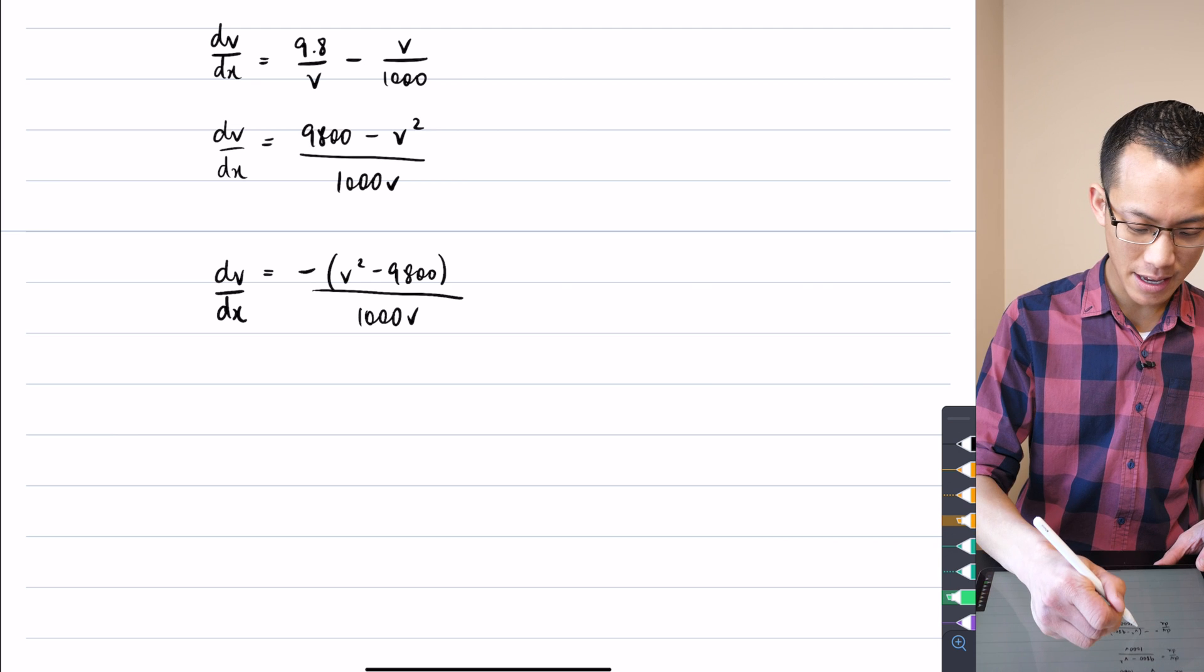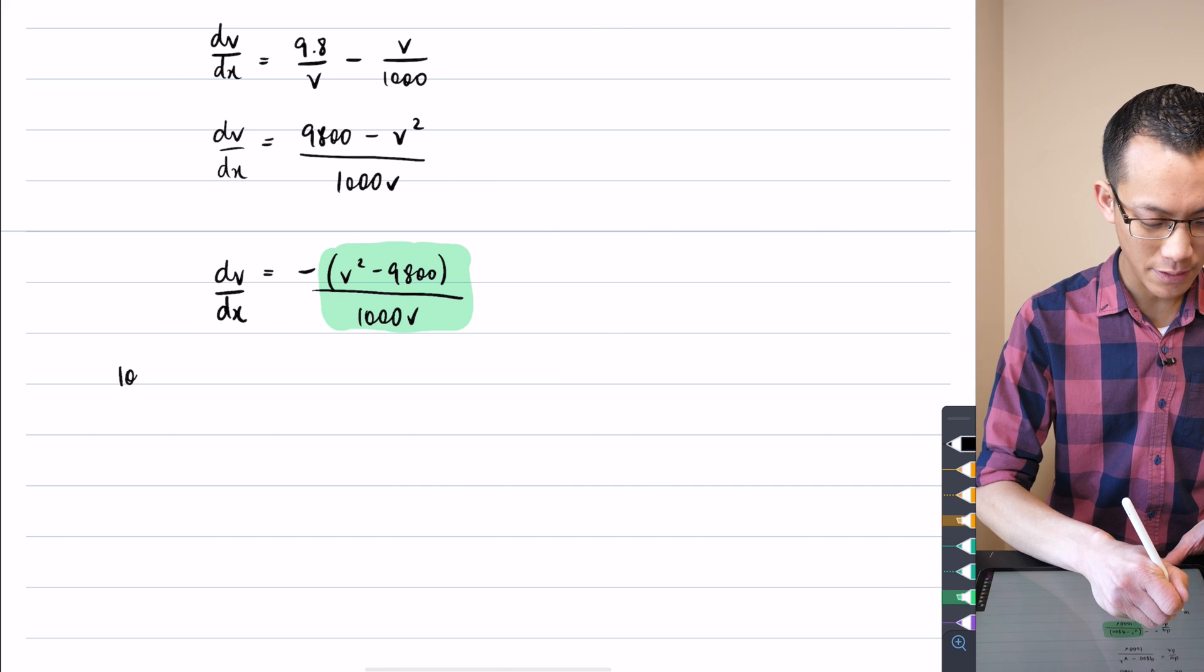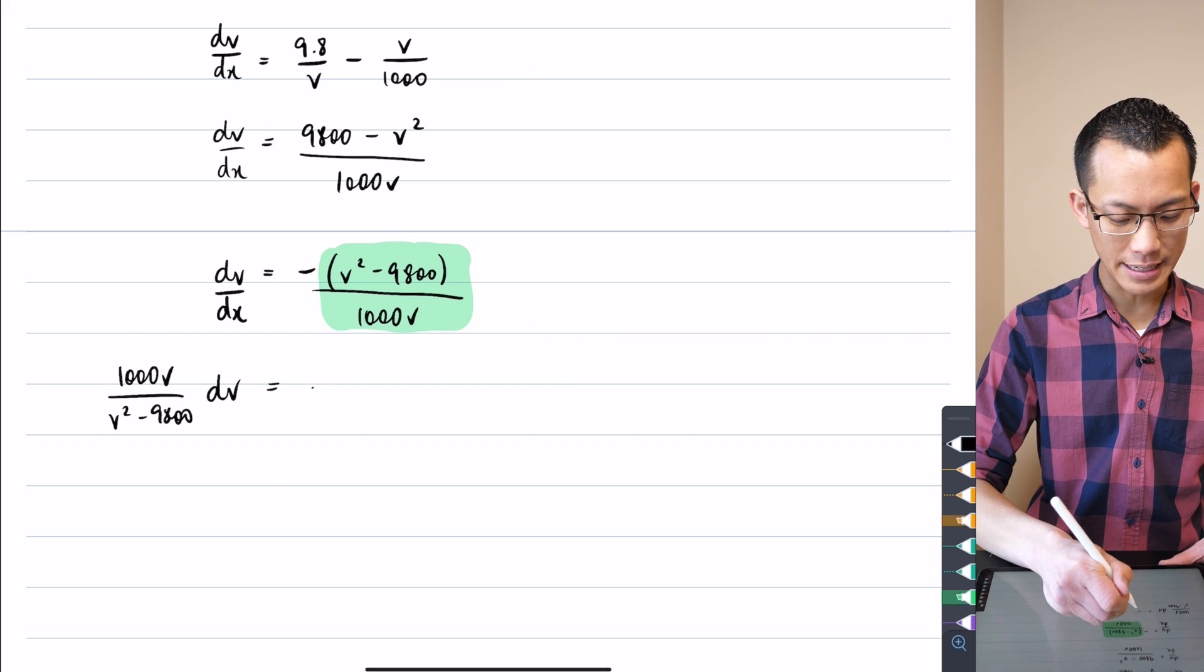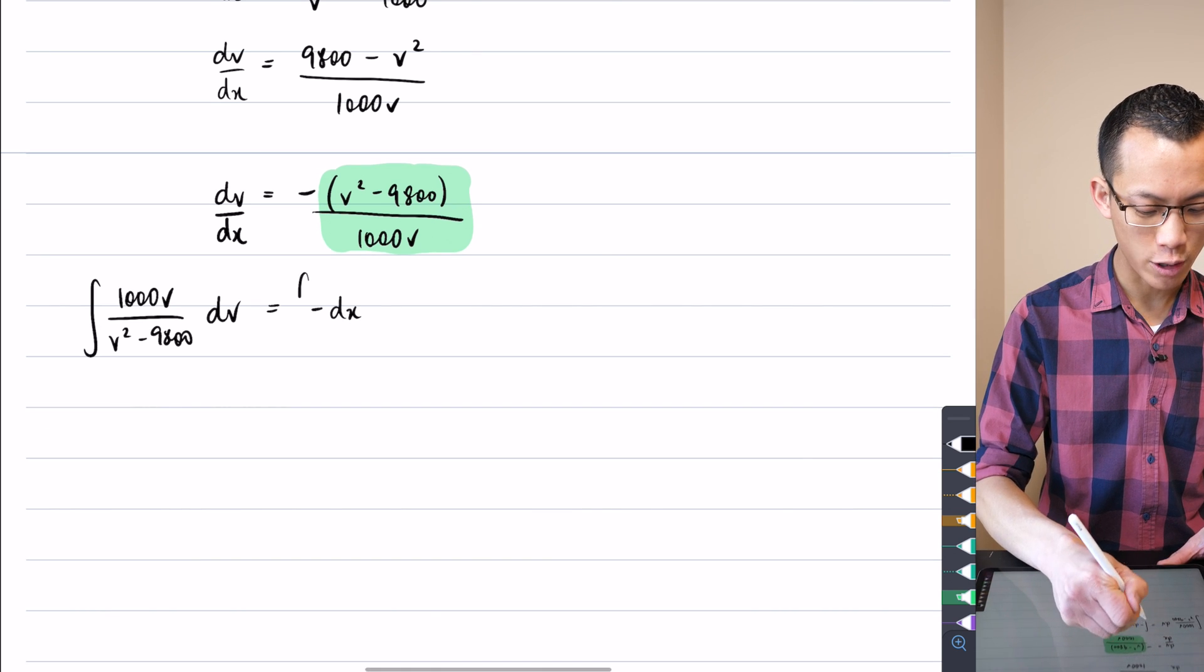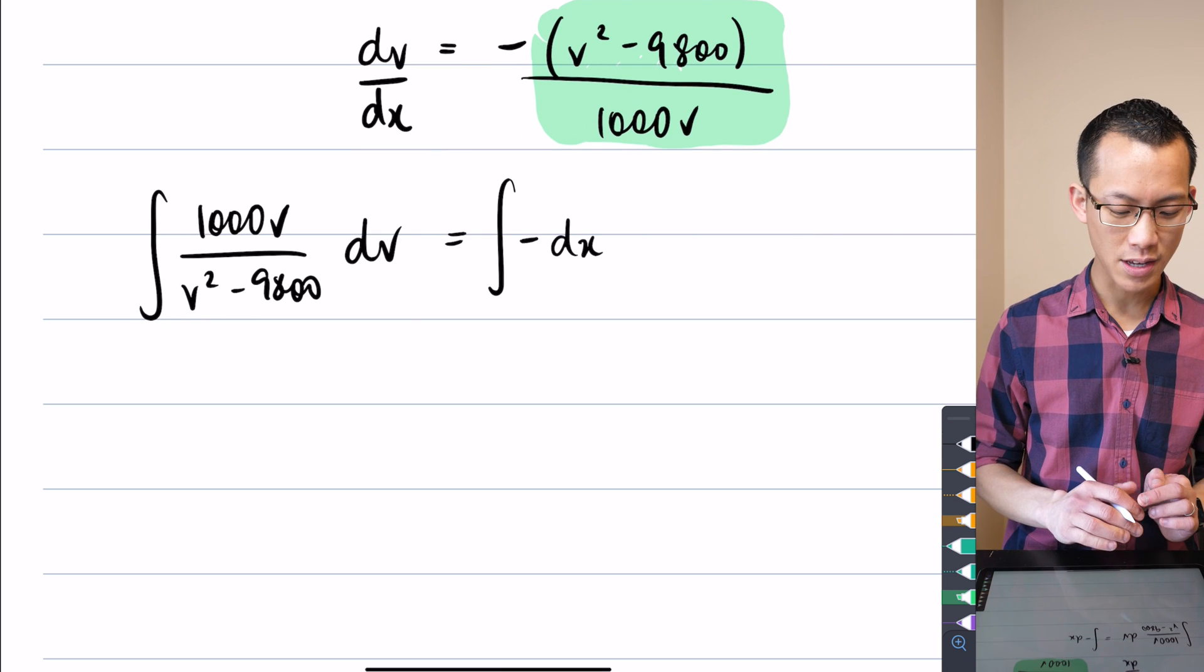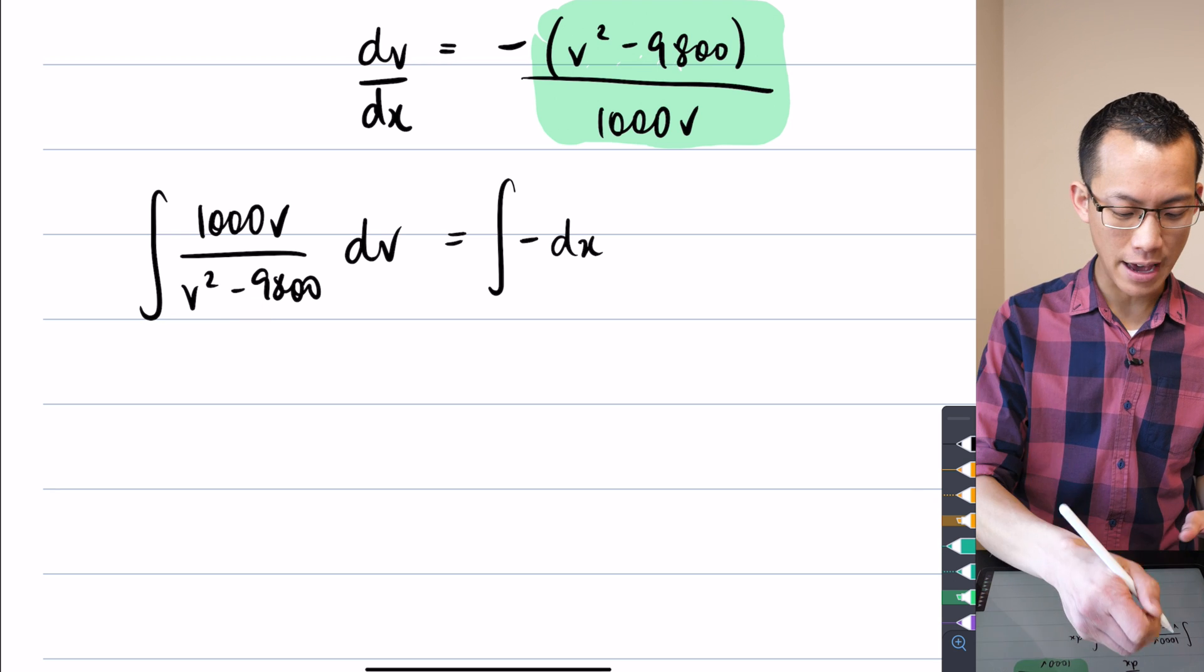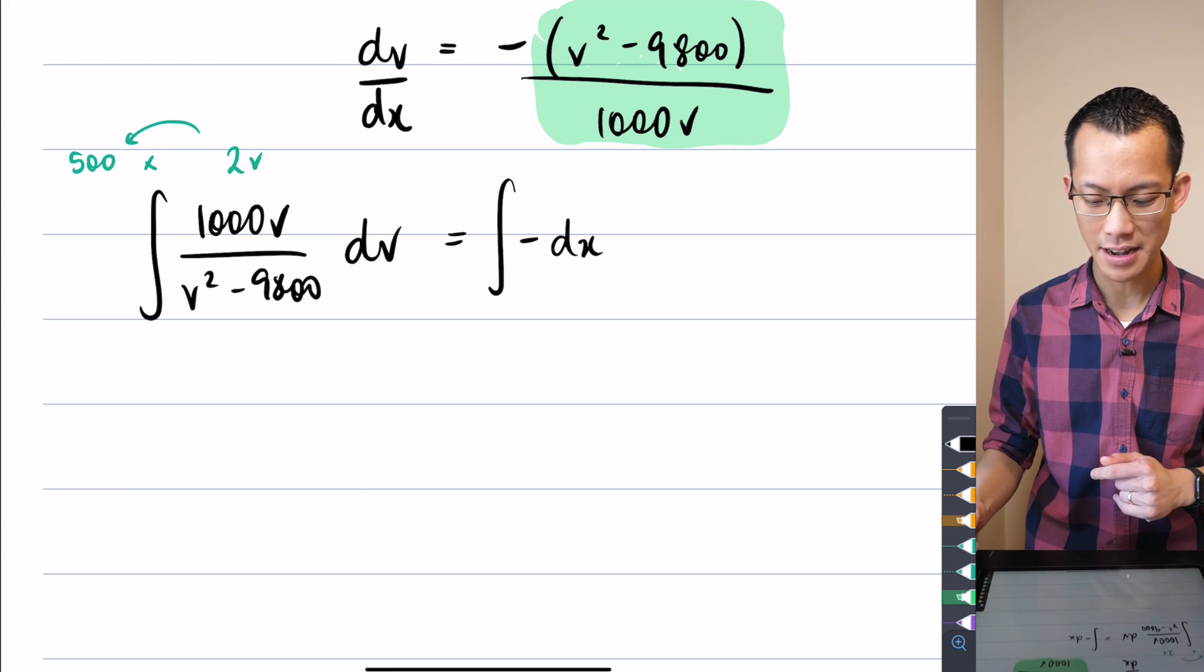I'm going to divide through by everything you can see here without the minus sign. That will give me 1000v all over v squared minus 9800. I will leave the dv where it is and multiply through by dx on the right hand side. Don't forget when you have a look at this integral on the left hand side, the integrand is almost in the form f dash on f. The only difference is that if this is f then the f dash I'm looking for is 2v, so there's going to be a 500 on the outside.